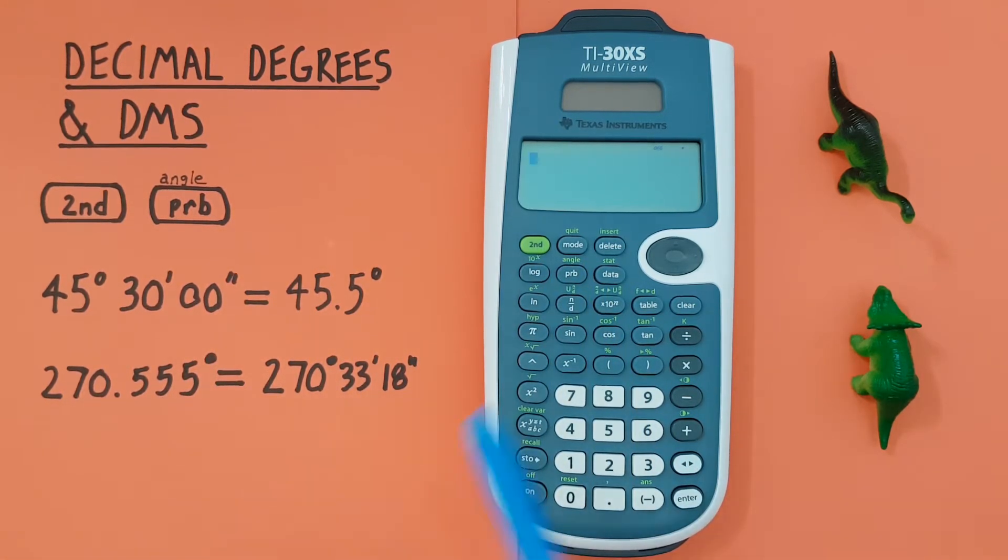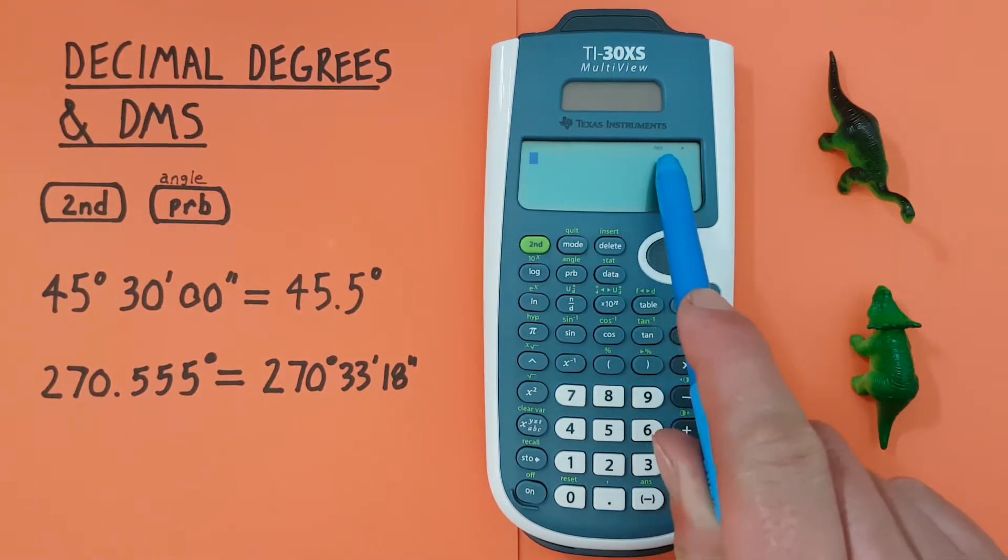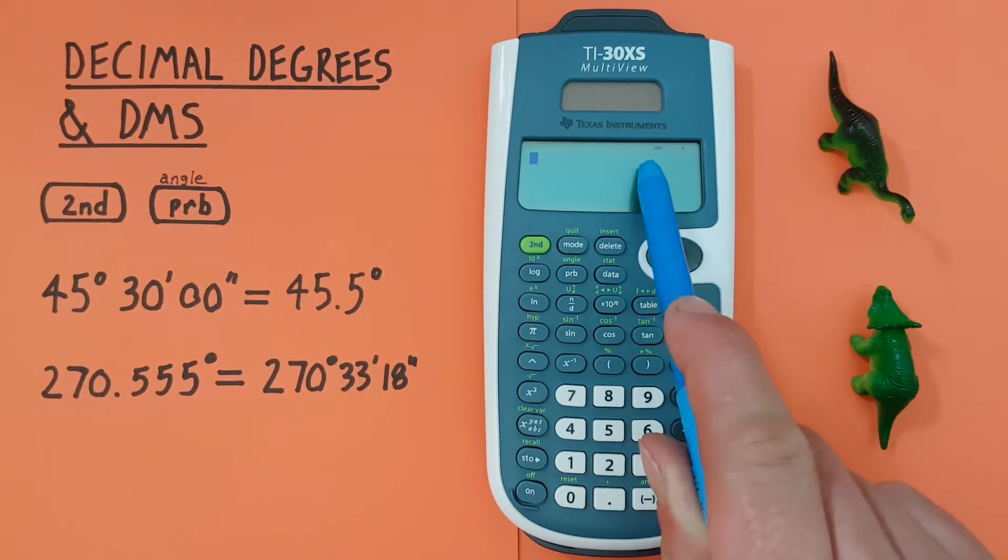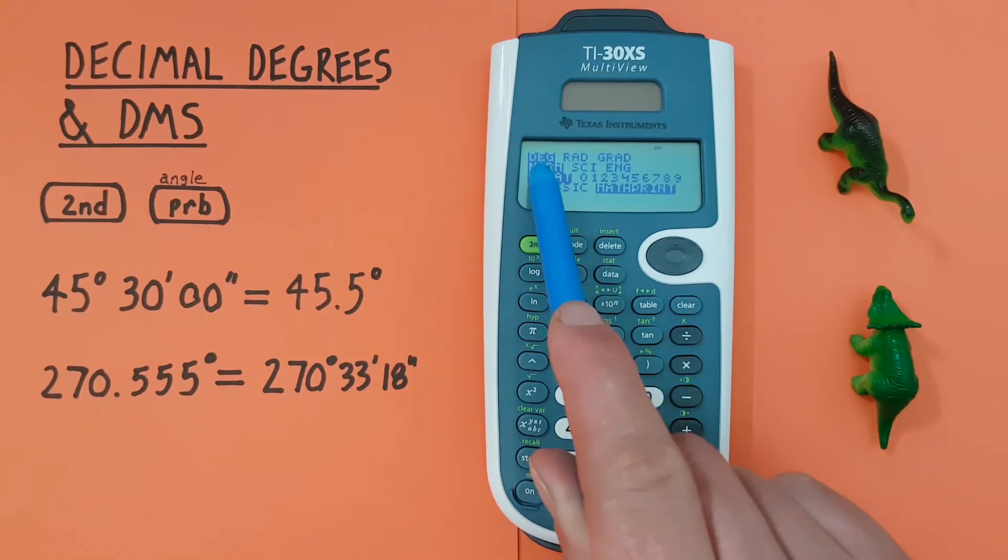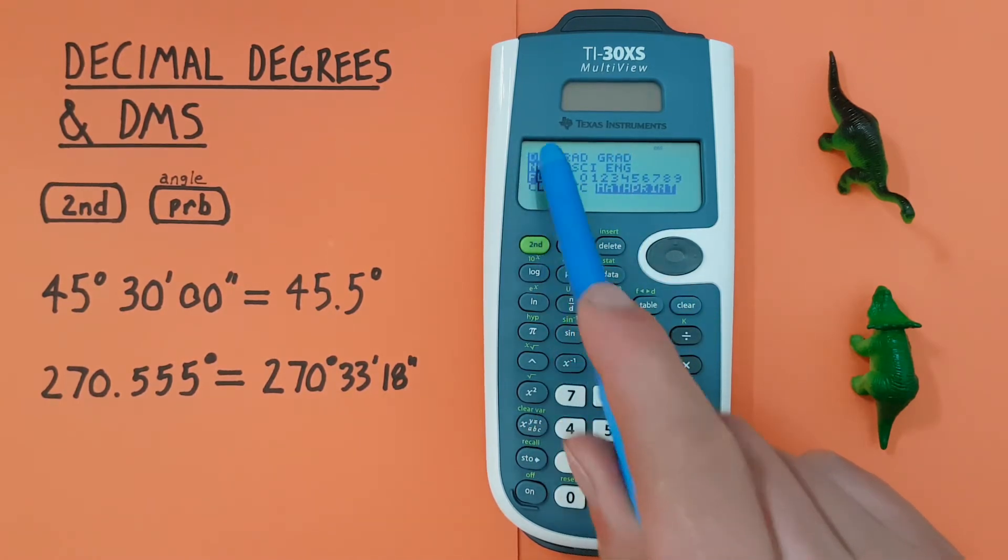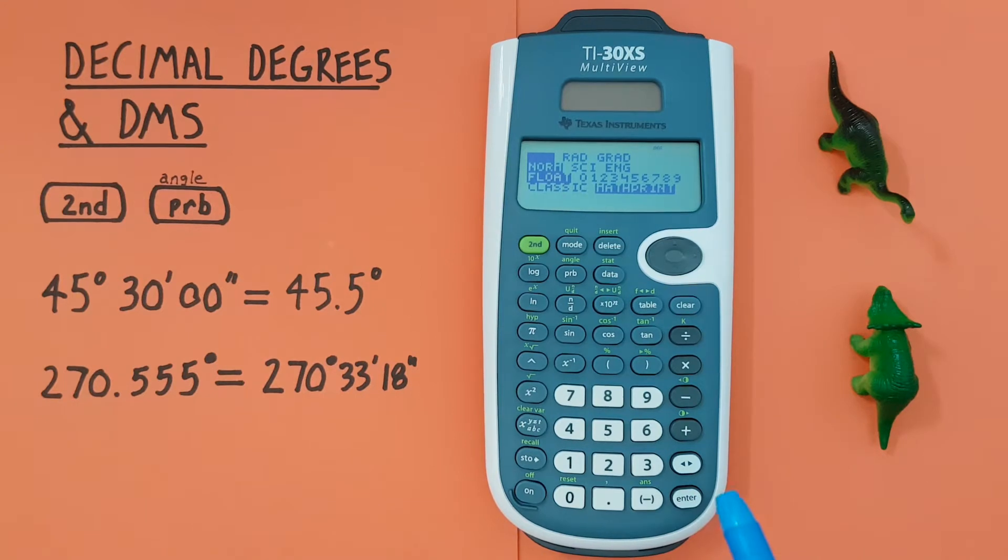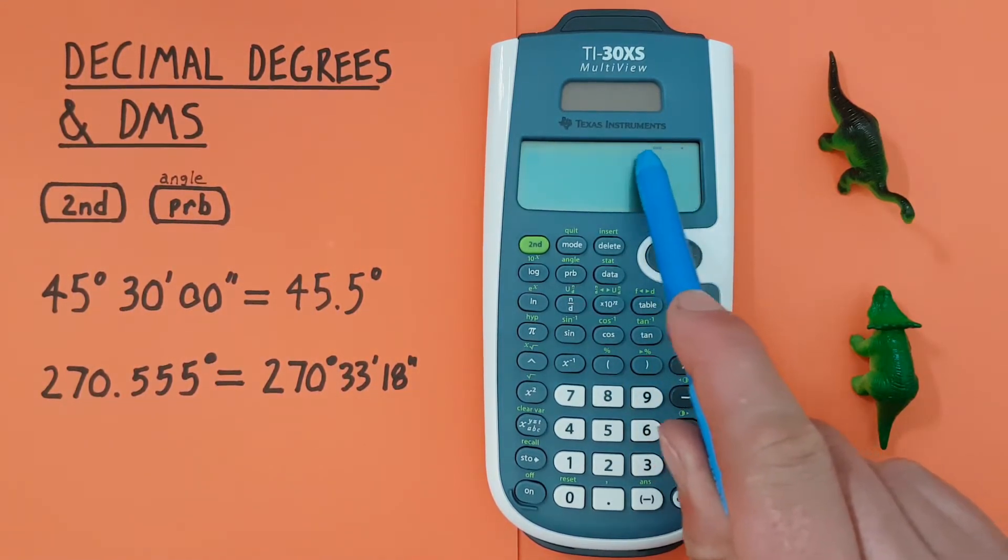This will be done in degree mode which you can tell if you're in with the little DEG at the top of your screen. If you're in a different mode you might get a different answer. So if you don't see DEG, what you can do to change it is press mode and then you'll see this menu here with three options. You want to make sure to highlight the DEG and press enter and then clear and you should now see DEG at the top of your screen.